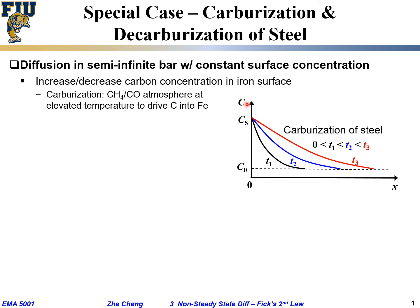In terms of concentration versus location, your surface concentration is more or less fixed, and as time goes from t1 to t2 to t3, the carbon extends deeper and deeper into the material. Looking at a fixed location, as time increases, the local concentration increases from black to blue to red. Or looking at the same concentration level, it goes deeper and deeper into the material. This is called carburization.